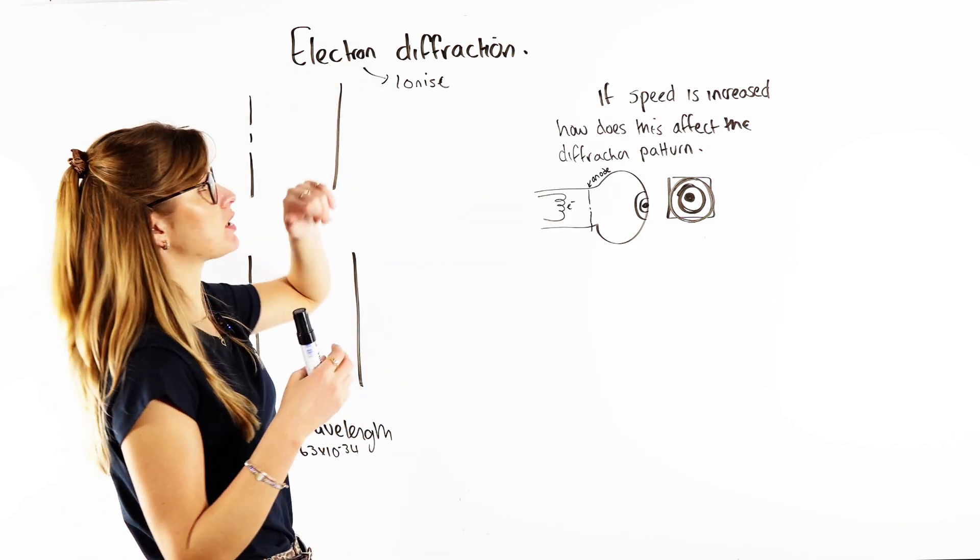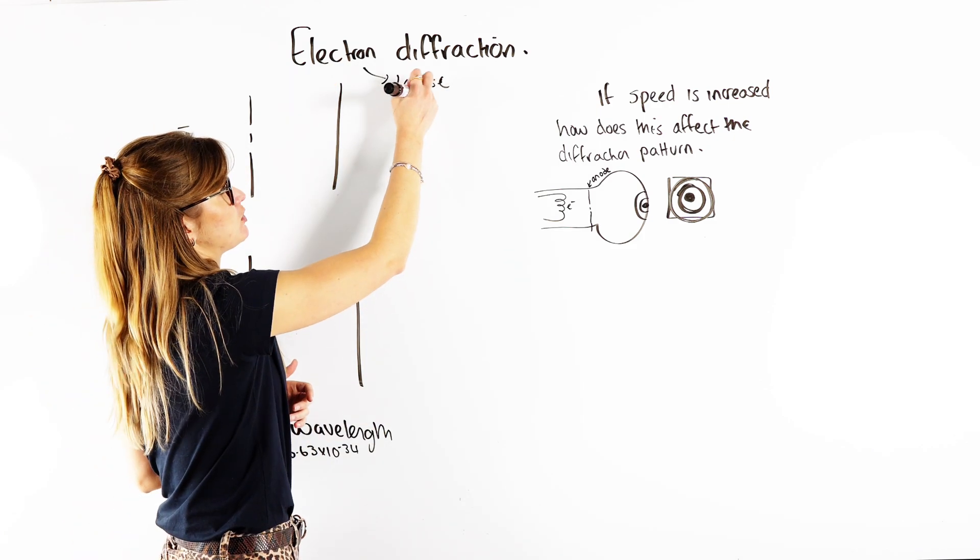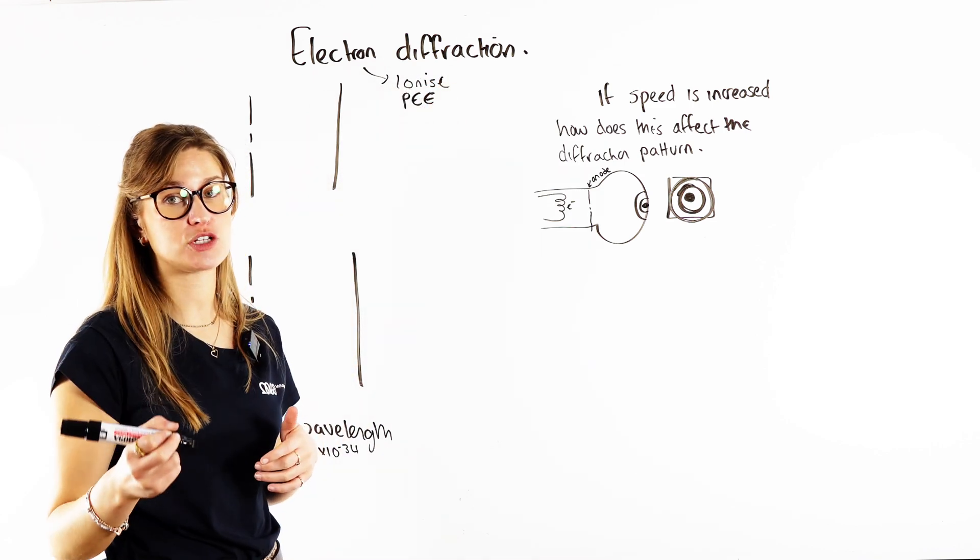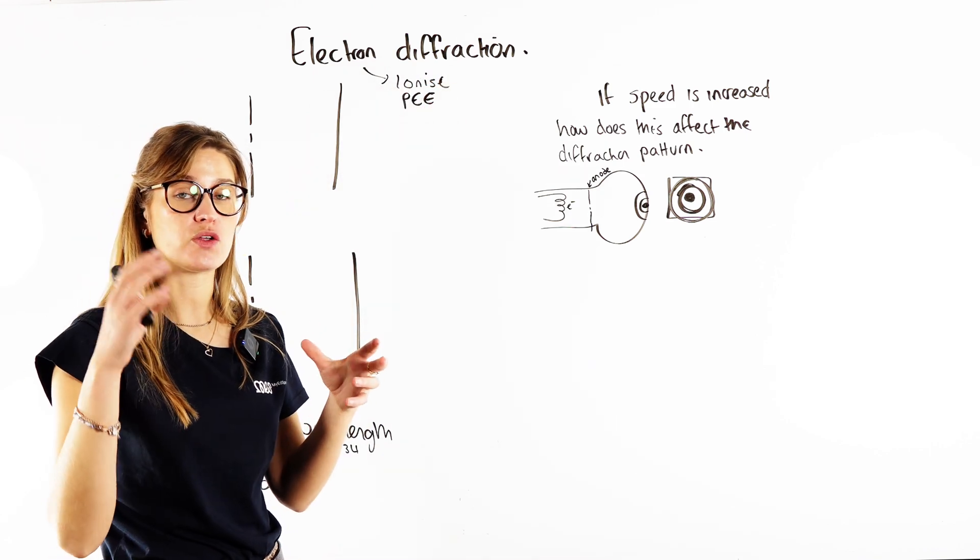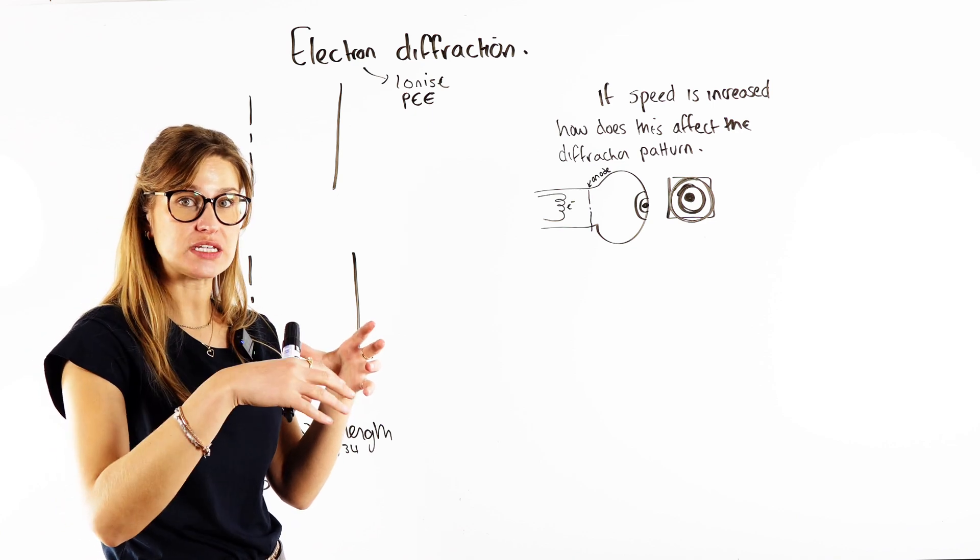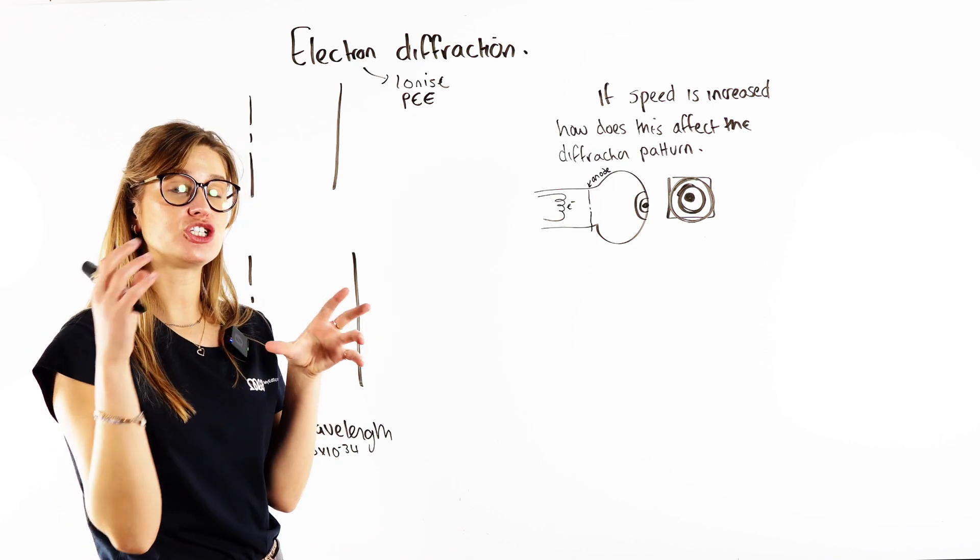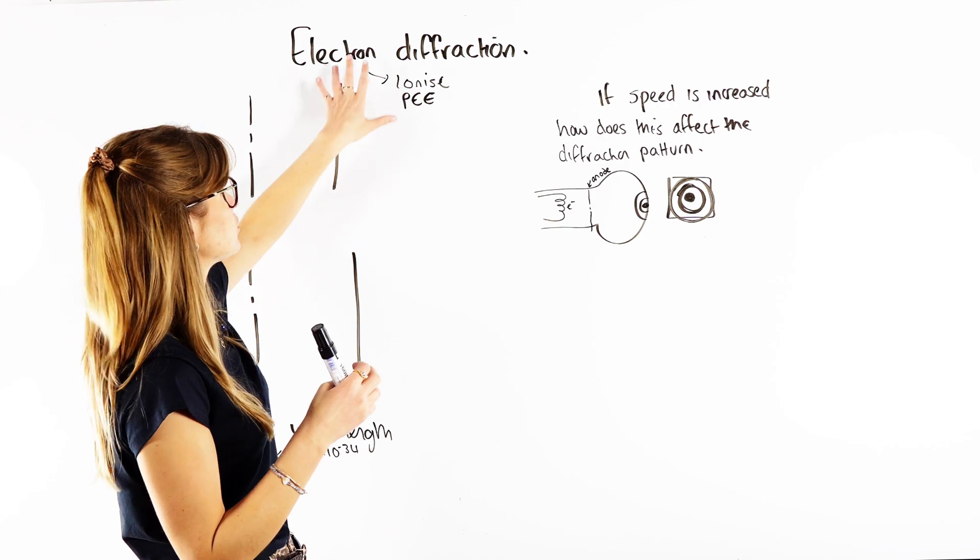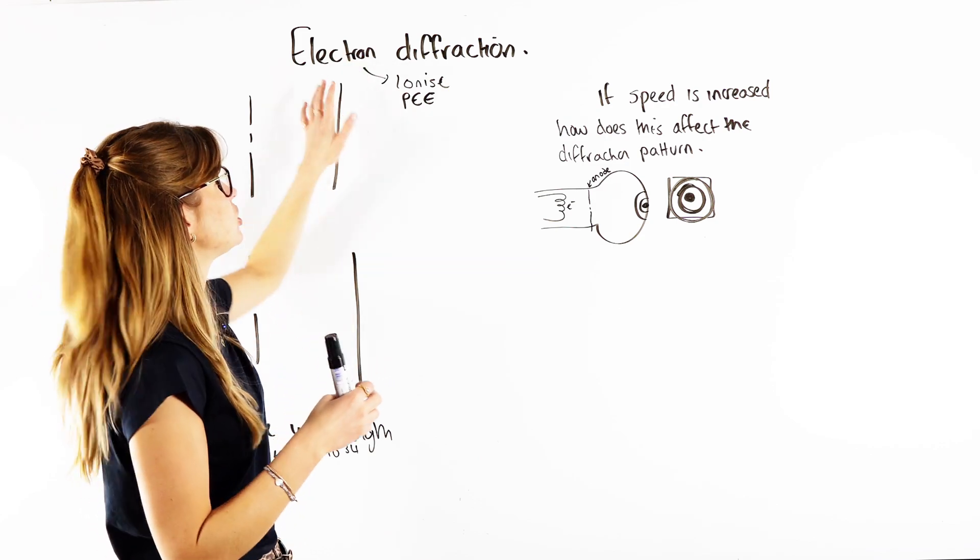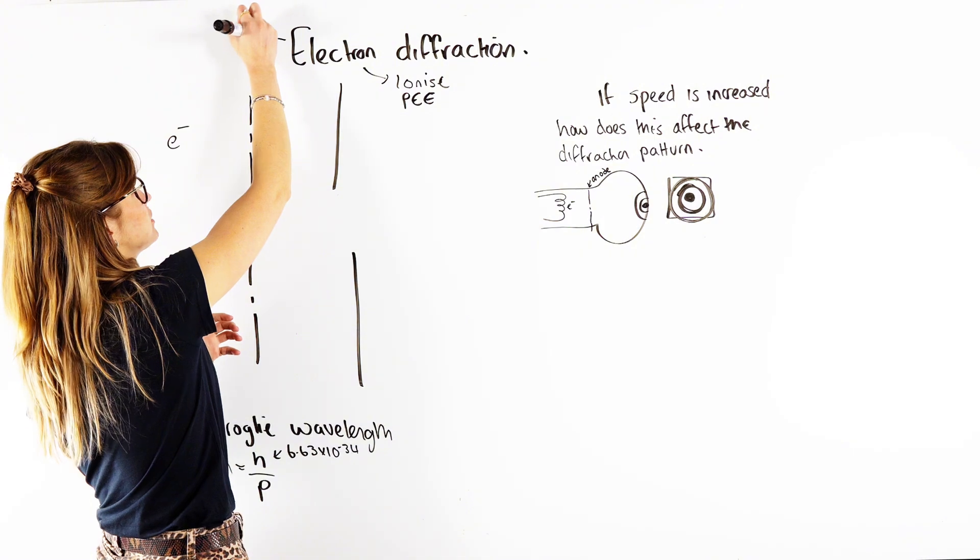We also know they're particles because of that photoelectric effect. So let me just go back to an earlier video there if you forgot what the photoelectric effect was. So remember that's when the photons or the light particles hit the surface, hit the metal surface, and if the energy is greater than the work function, we know we get electrons emitted from the surface. So we know that it is particles, right? We know that electrons are particles.